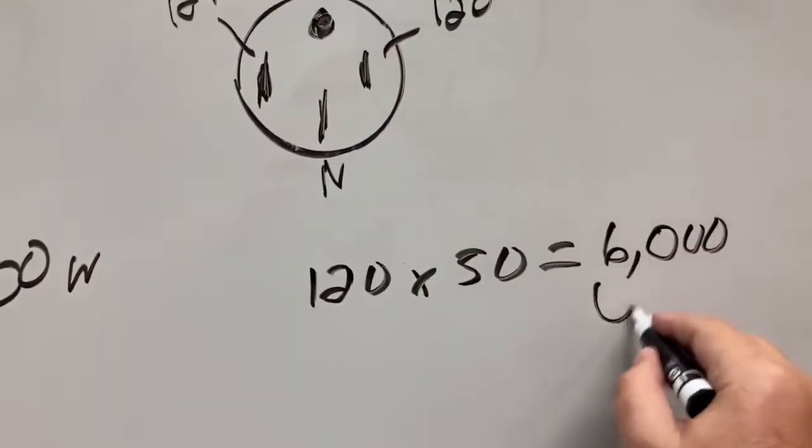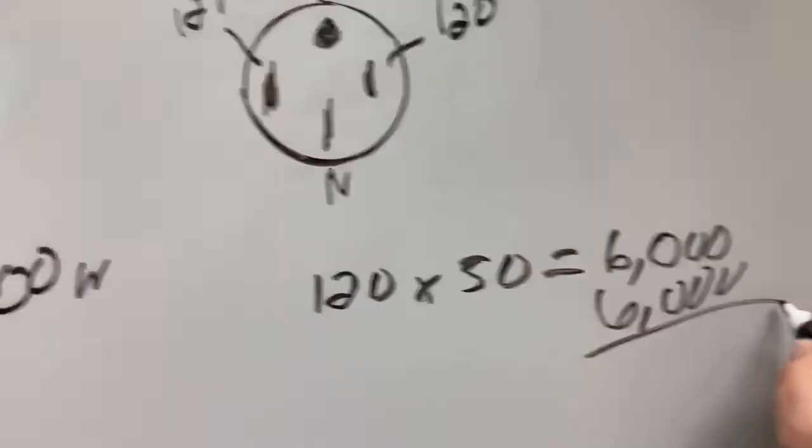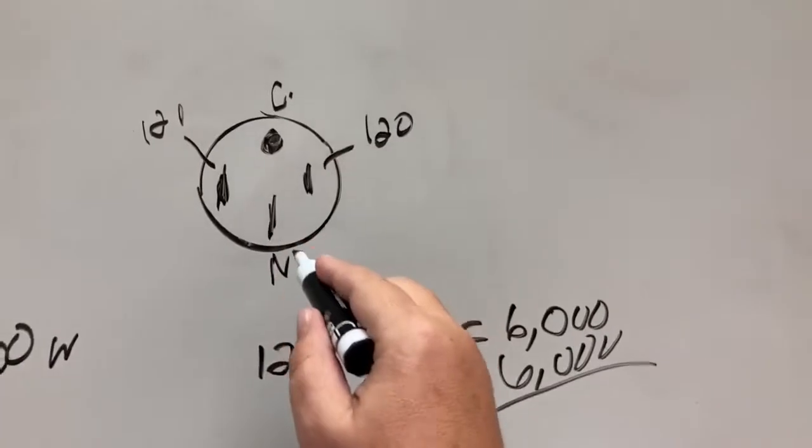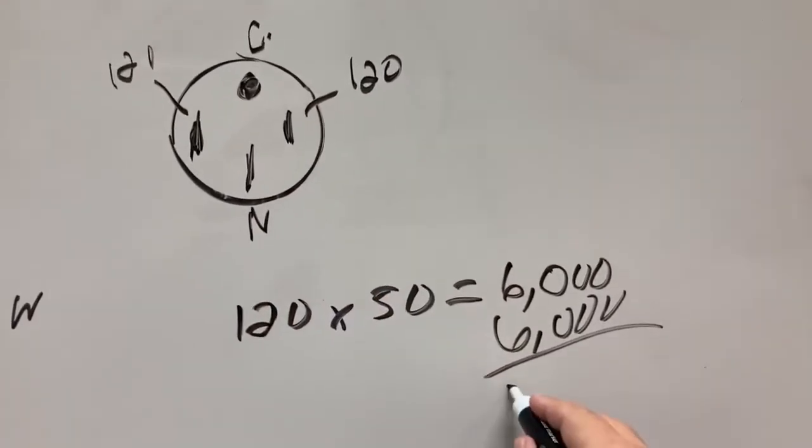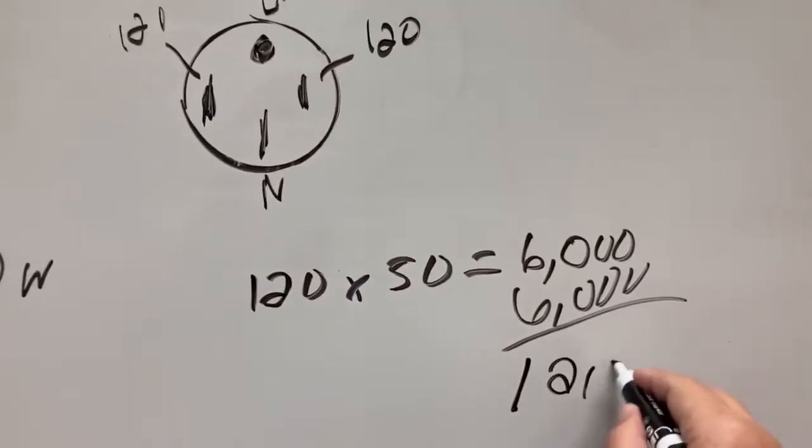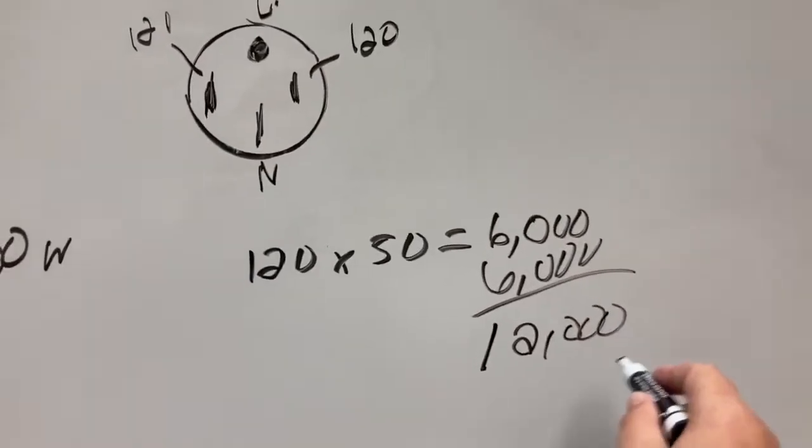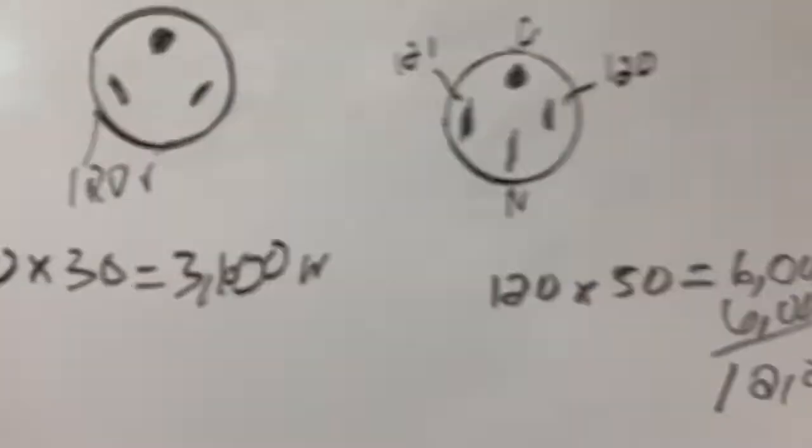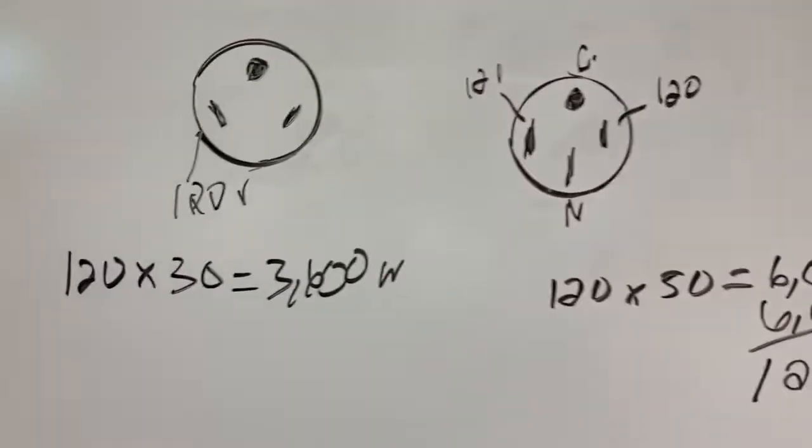But you have two of them. So you add the 6,000 together, which means that this 50-amp plug-in can pull 12,000 watts. And as you can see, 12,000 watts is much more than the 3,600 watts of the 30-amp.